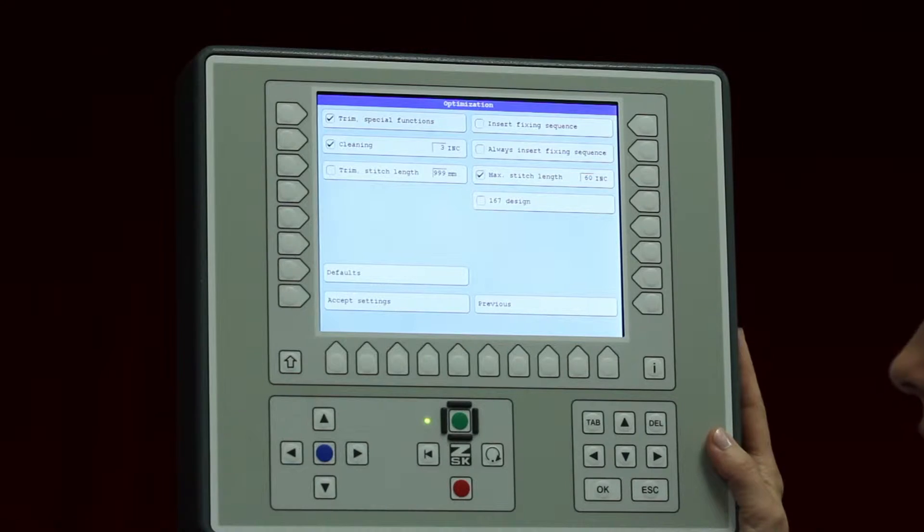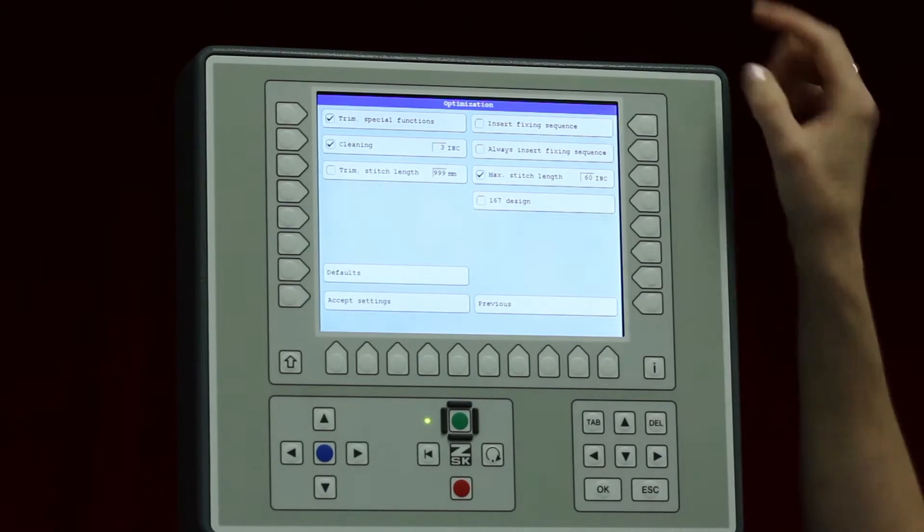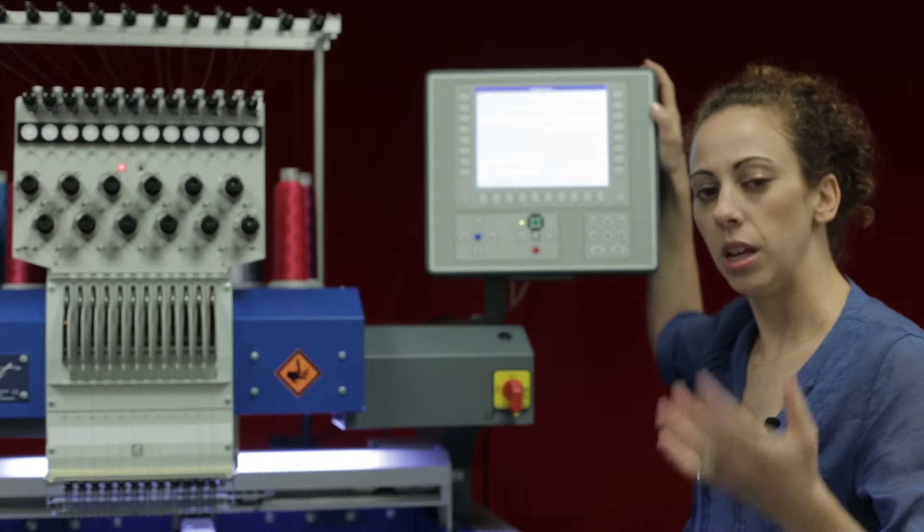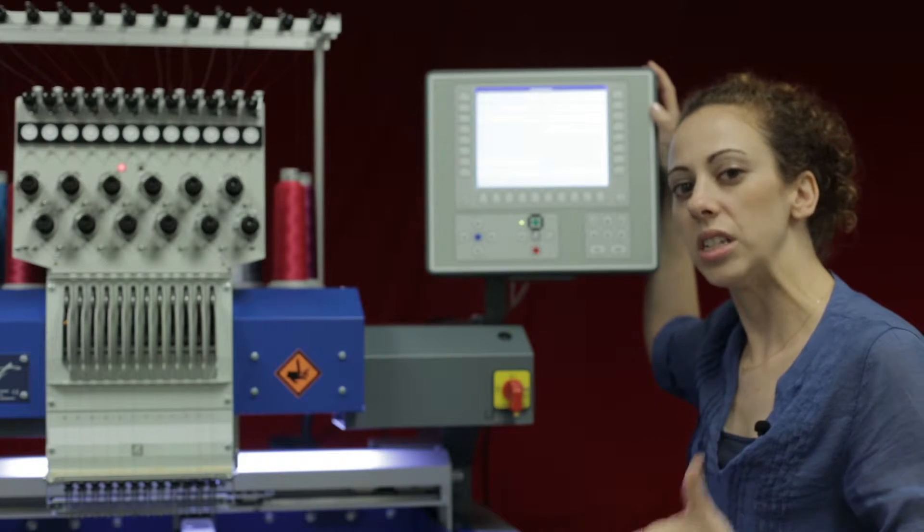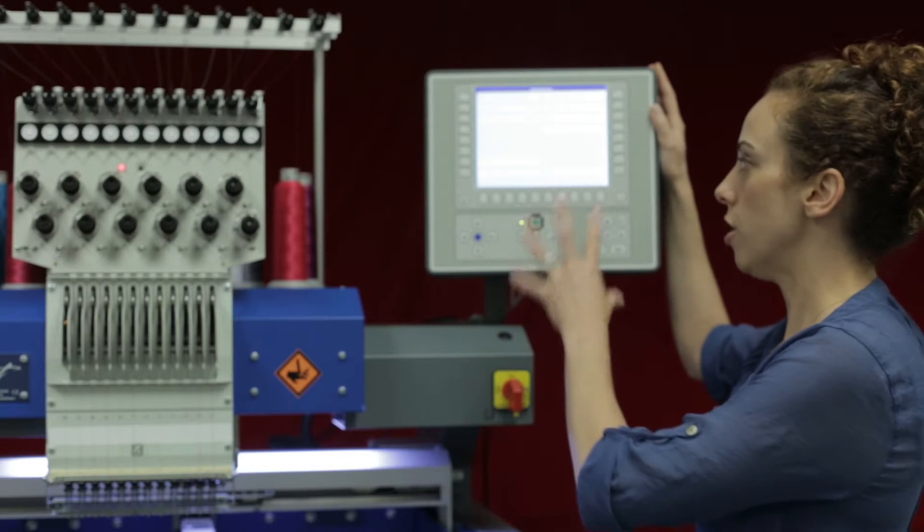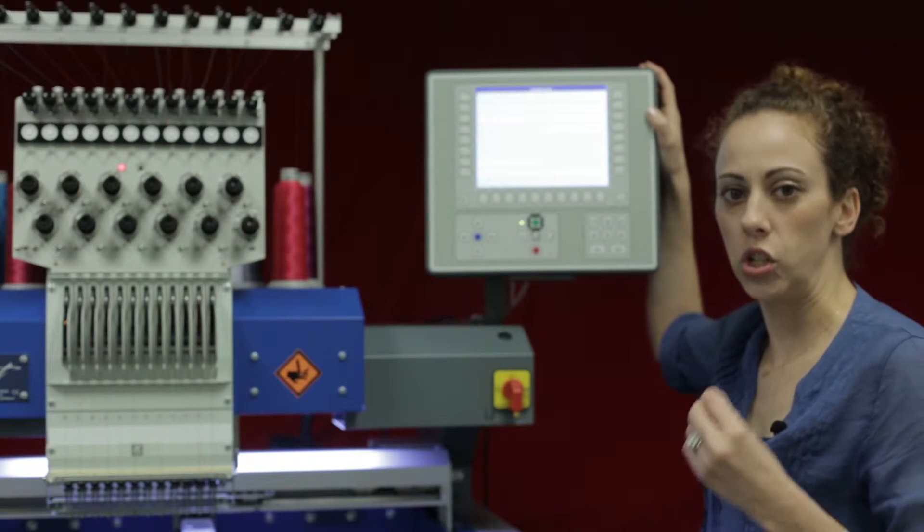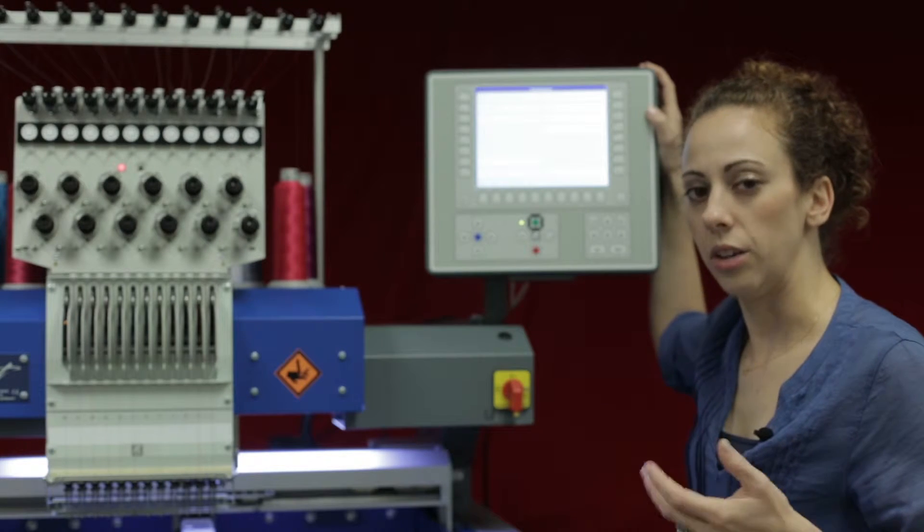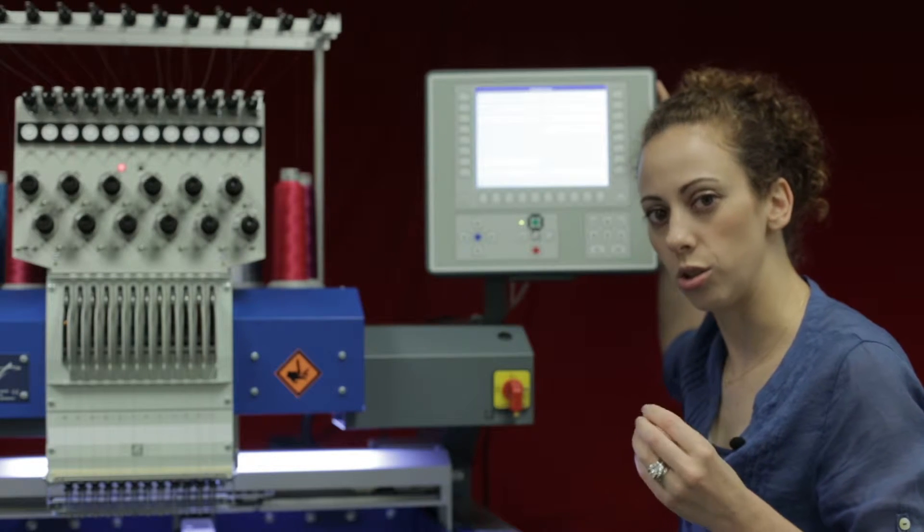In more settings if I click here on insert fixing stitch, what that means is that if at the beginning or end of a piece of the design the T8 notices that there are no small stitches for the lock stitch, it will put it in automatically. Now that's if it detects that there's no small stitches.